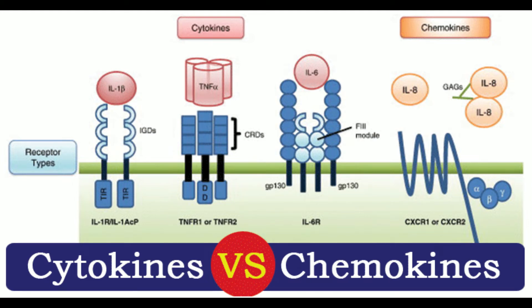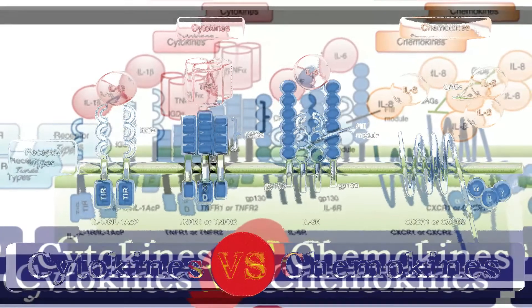1. Definition: Cytokines are small proteins produced dominantly by immune cells which are important in cell signaling. Chemokines are specific cytokines that are specially adapted for chemotaxis of cells. 2. Description: Cytokines are a broad family of chemical messengers serving to bring about the immune response. Chemokines are chemotactic cytokines.